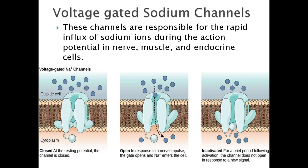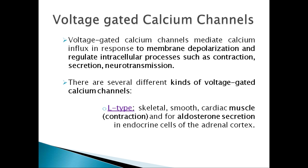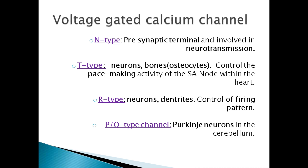Voltage-gated calcium channels mediate the calcium influx in response to membrane depolarization and regulate intracellular processes such as contraction, secretion, and neurotransmission. There are several different kinds of voltage-gated calcium channels: L-type, N-type, T-type, R-type, and P/Q-type channels. They perform different types of calcium passage in different cells and tissues of the body.